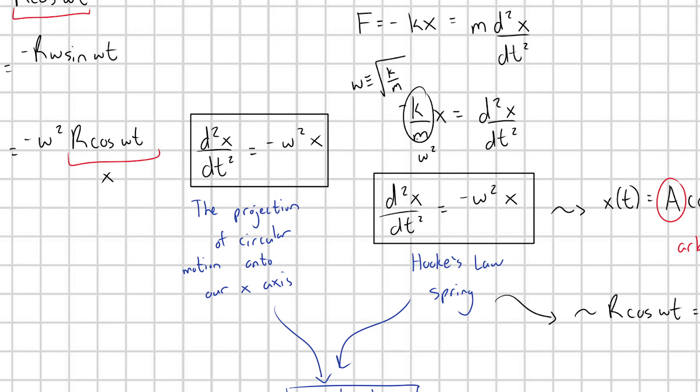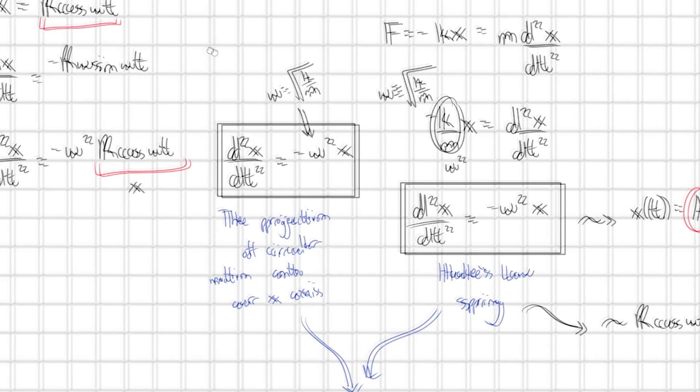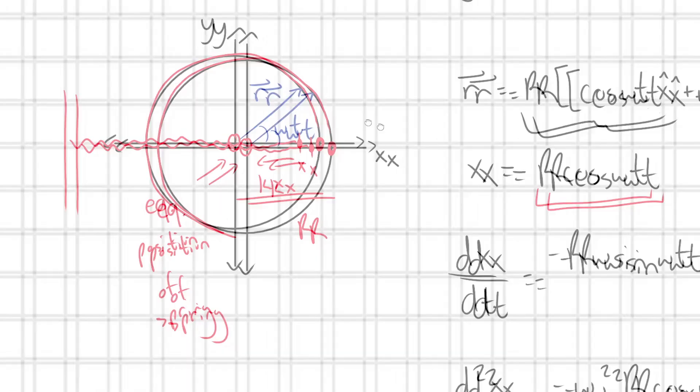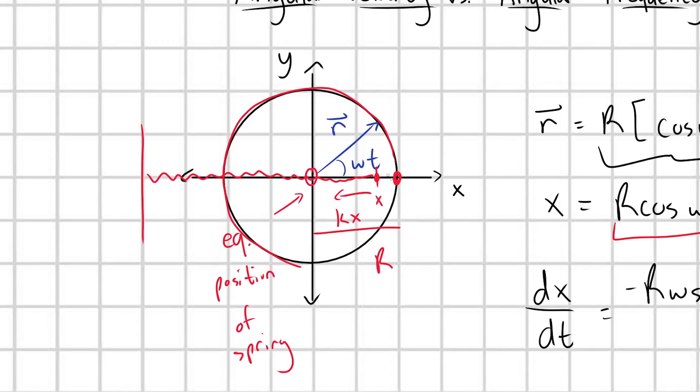When we were solving the spring problem, we defined omega. Omega was defined as square root k over m. So for these two equations to truly be identical to each other, then this omega here in my circular motion equation, this angular velocity must also be equal to square root k over m. So if I tune my turntable to have an angular velocity of square root k over m, these motions will line up exactly one-to-one with each other.